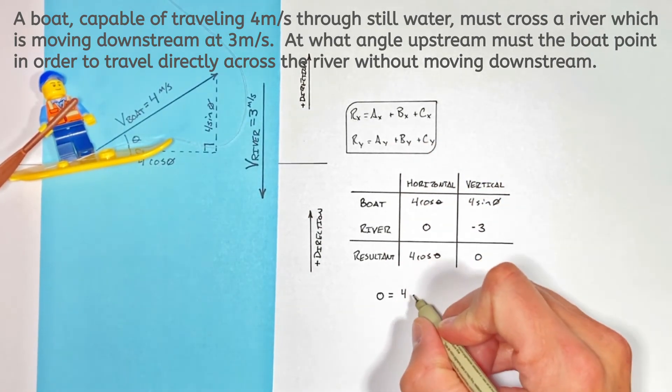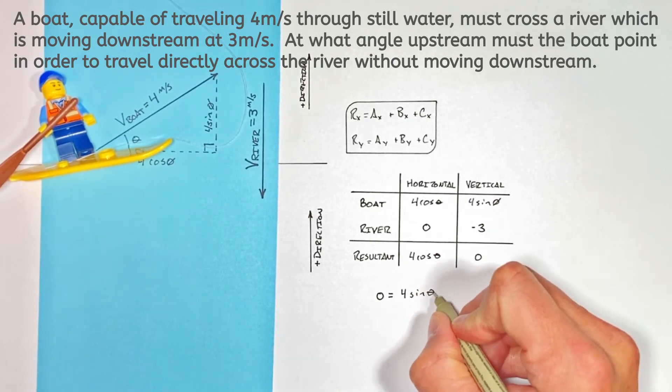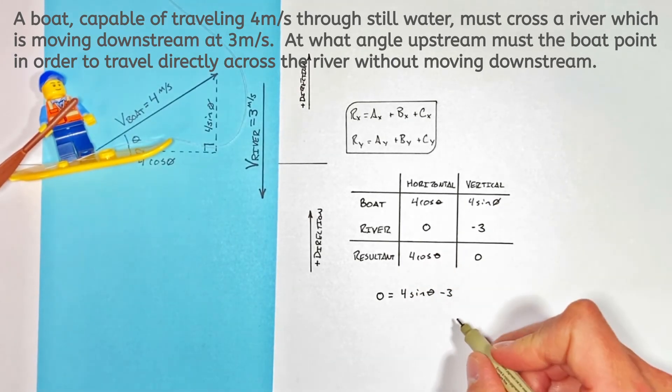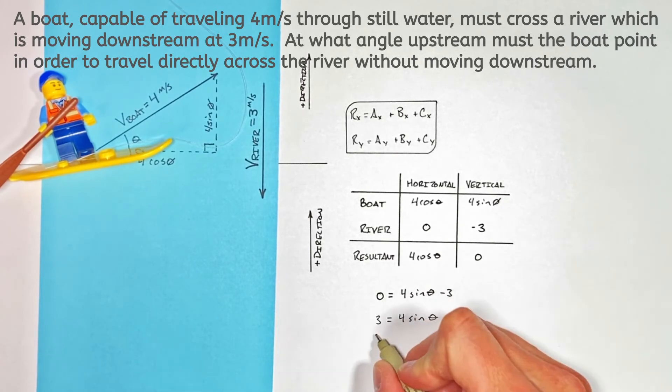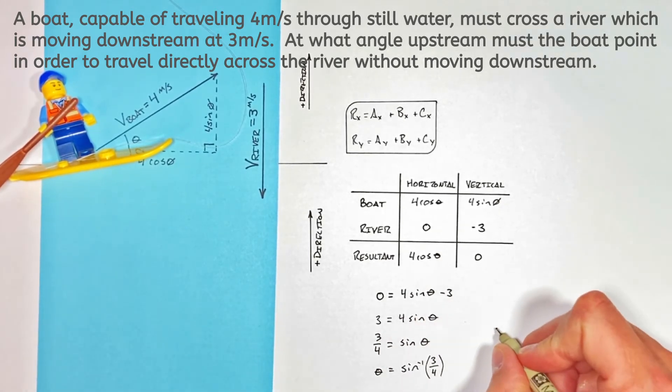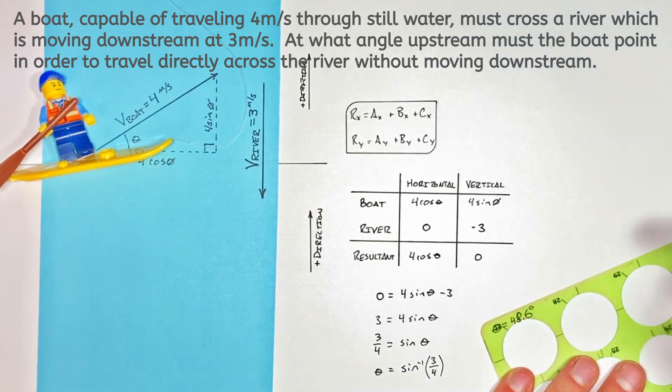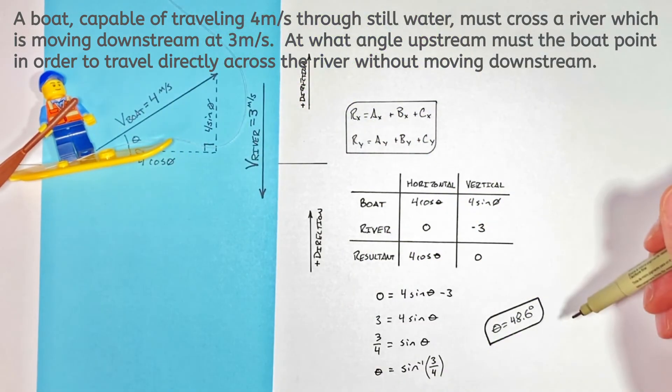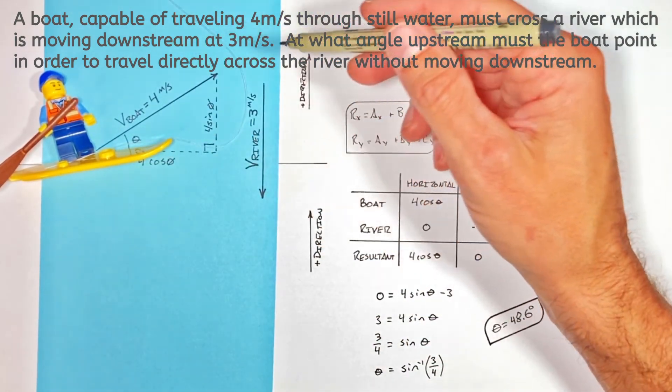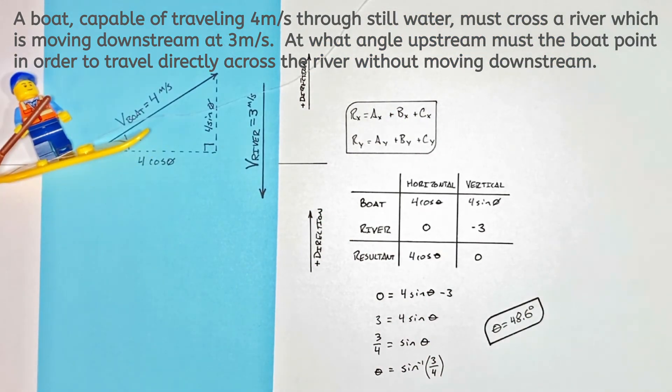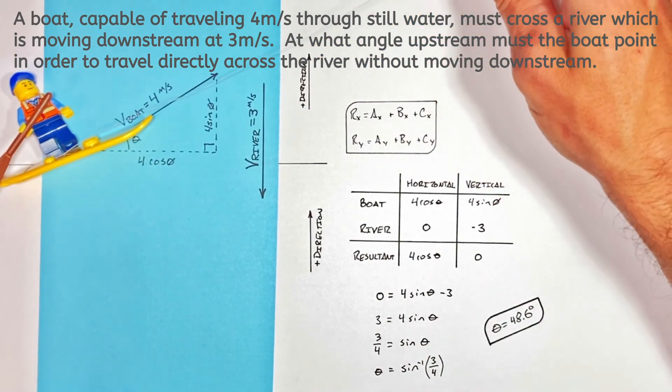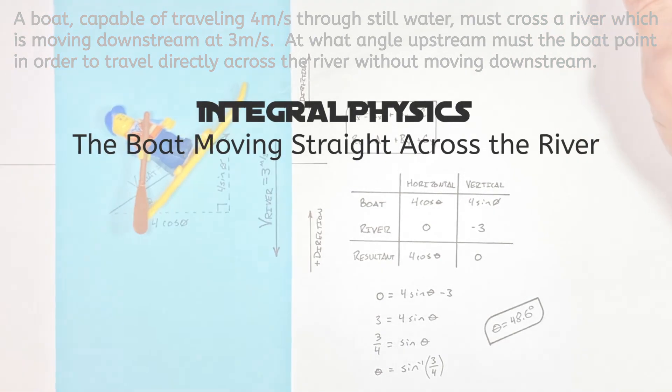So we're going to have 4sinθ - 3. Well, rearranging this, we'll get that θ is 48.6° from straight across the river. And that's it—the angle which the boat needs to point upstream in order to actually travel straight across the river. So I hope you found this useful, and on that note, that's all for now.